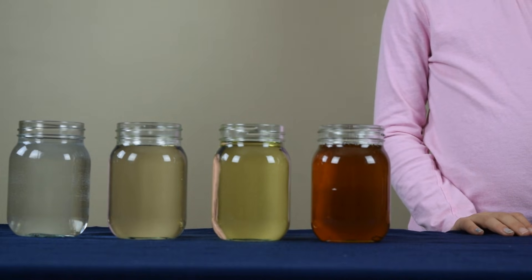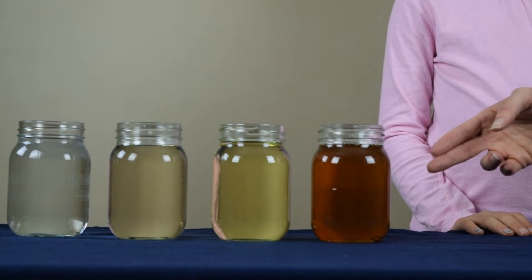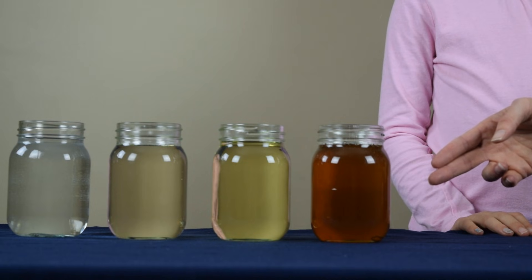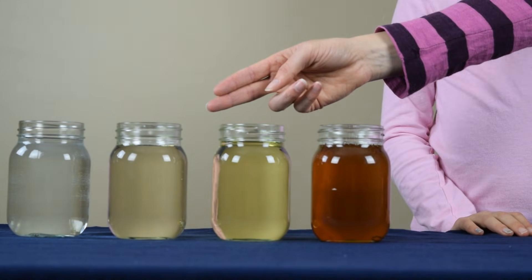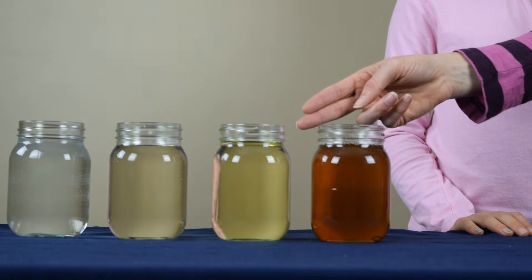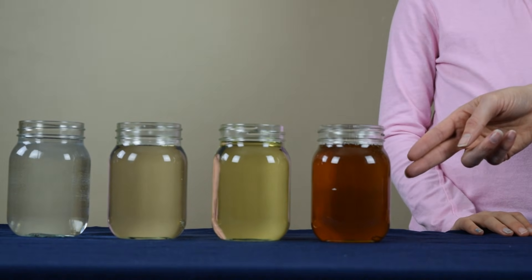To begin the experiment, we have started with four jars and we have filled each of them with a different type of liquid. In the first jar, we put water. In the second jar, we put corn syrup. In the third jar, we put oil. And in the fourth jar, we put honey.